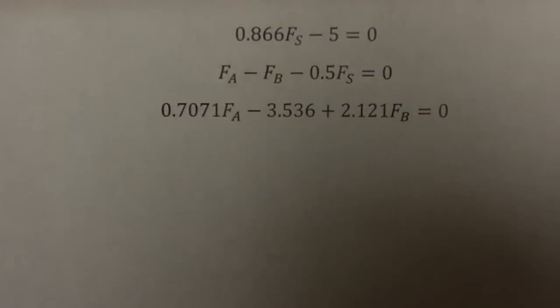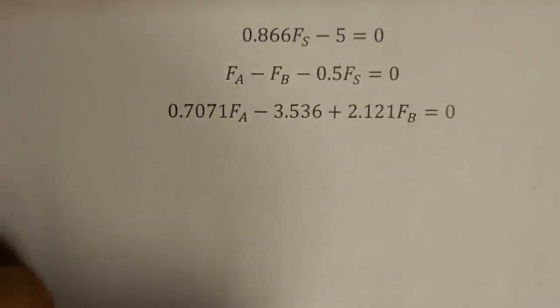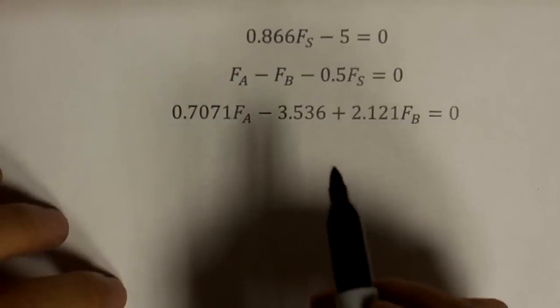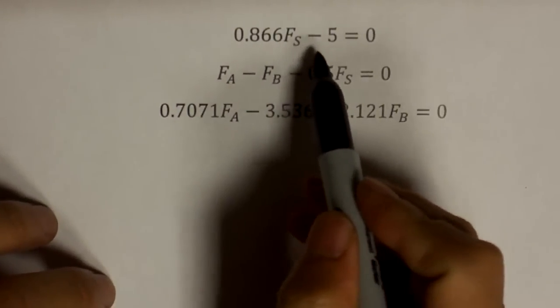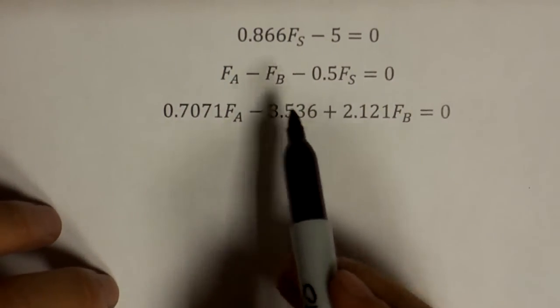Here is a typical equation that you may run into in engineering mechanics. As you can see, there are three unknowns here: Fs, probably some force at point S, Fa and Fb.